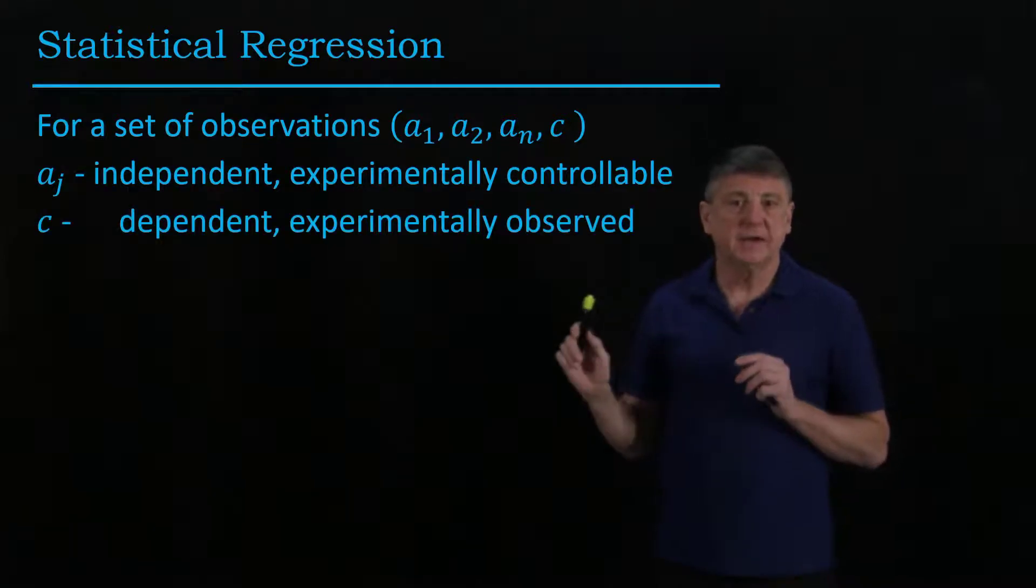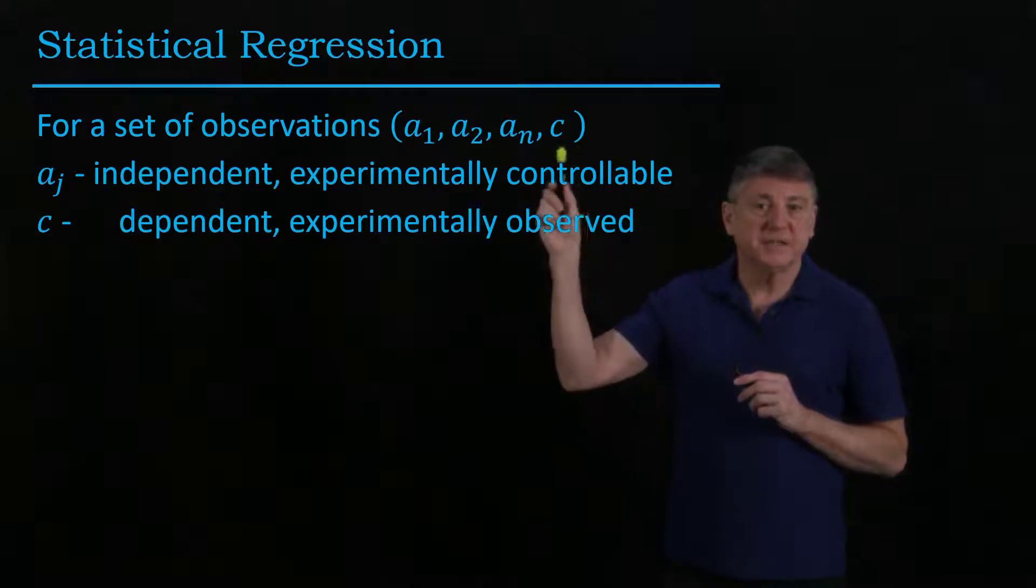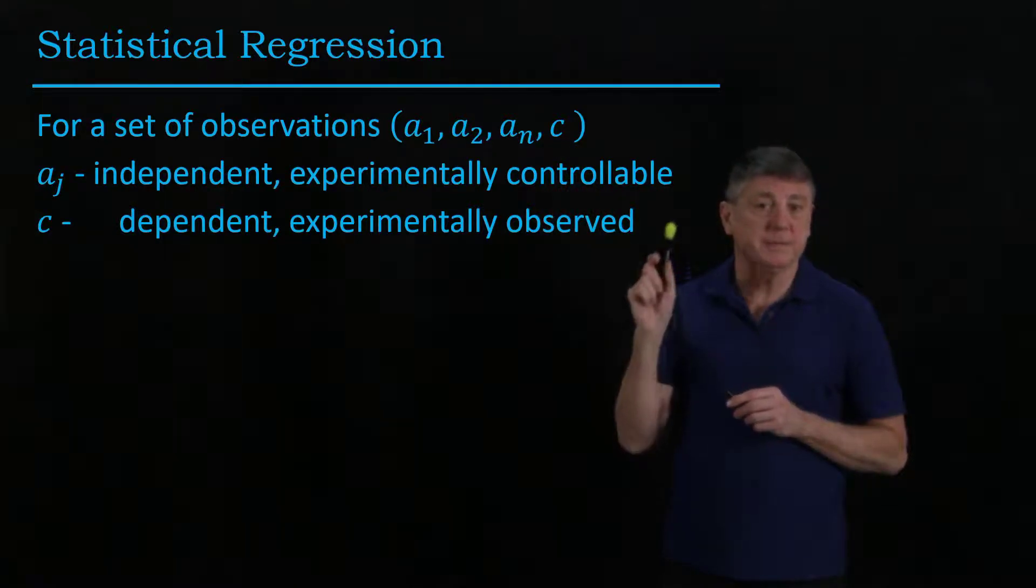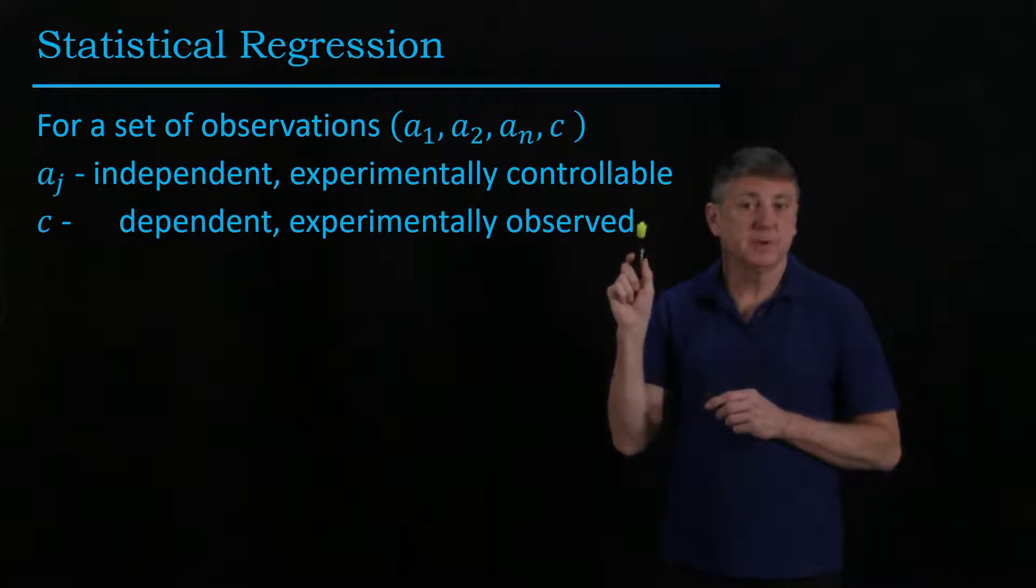And in another sense that matters importantly, the observation C will be dependent. So typically in an experiment these would be things that an experimenter can control and these are things that an experimenter can observe.